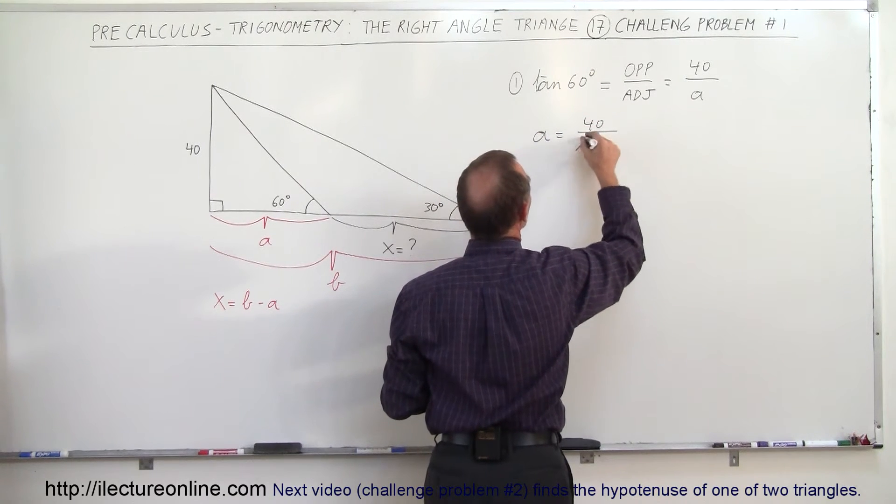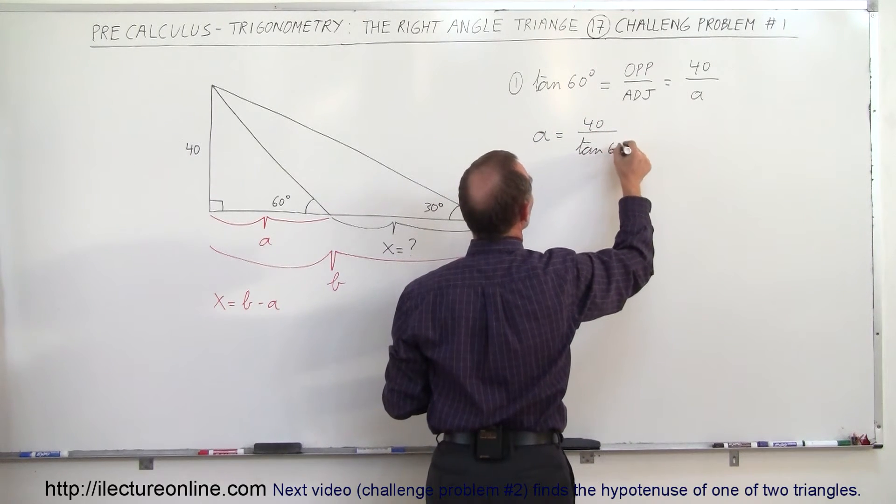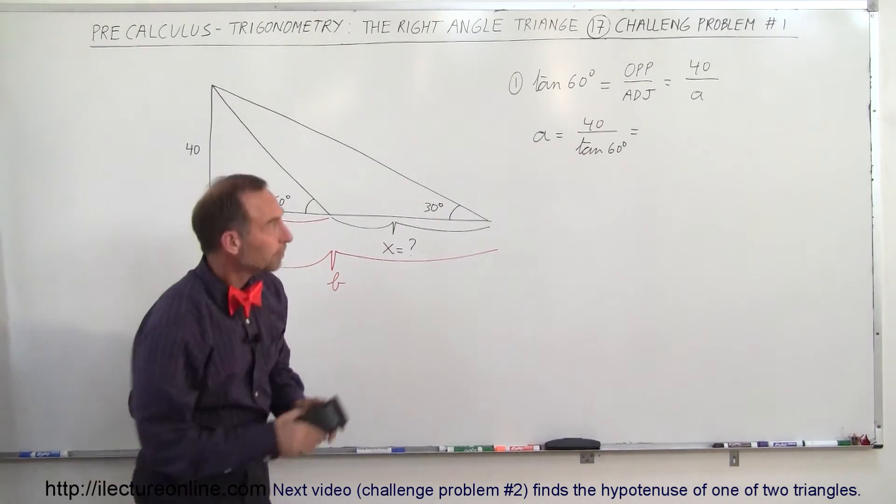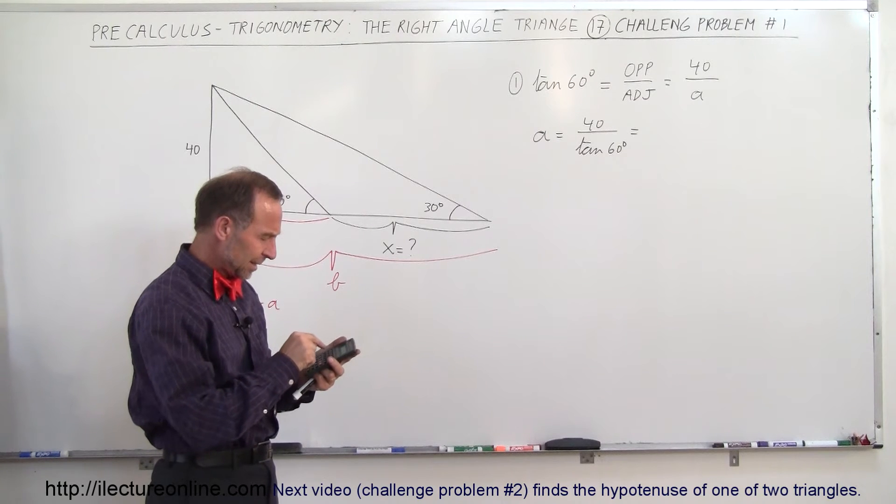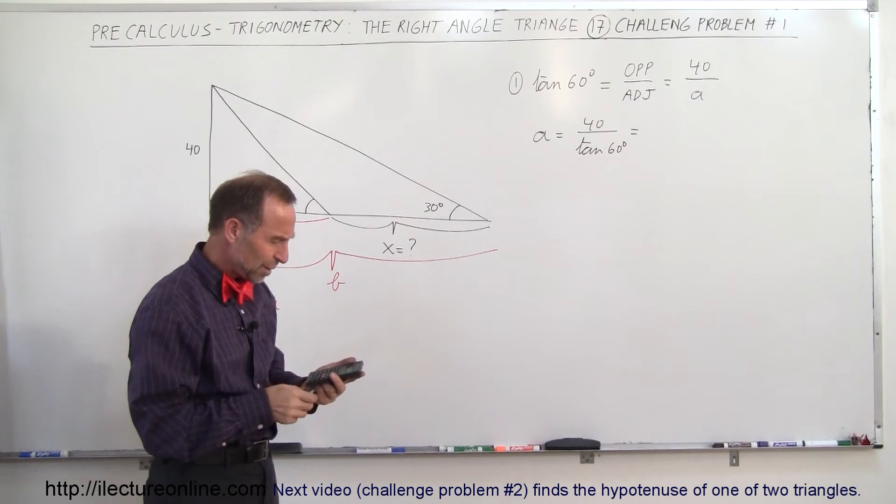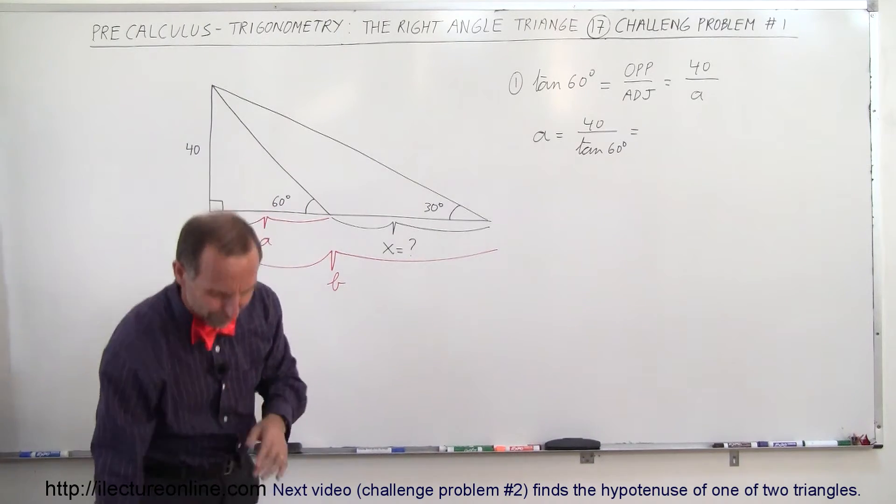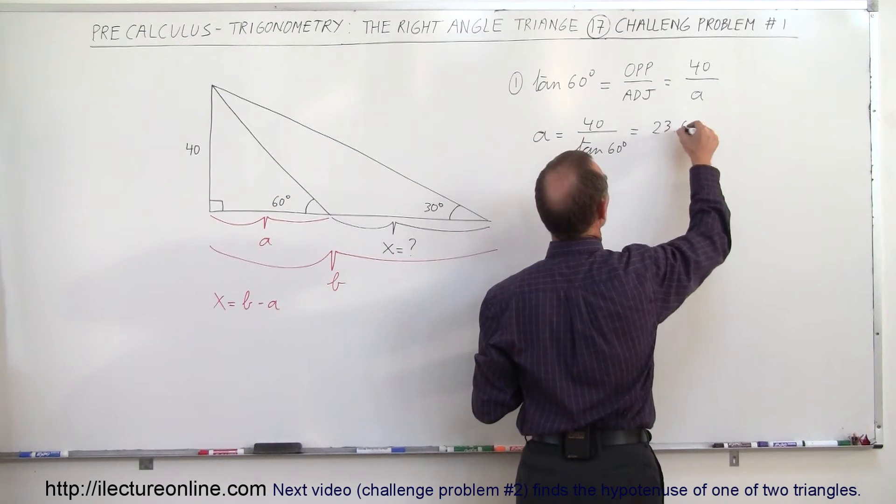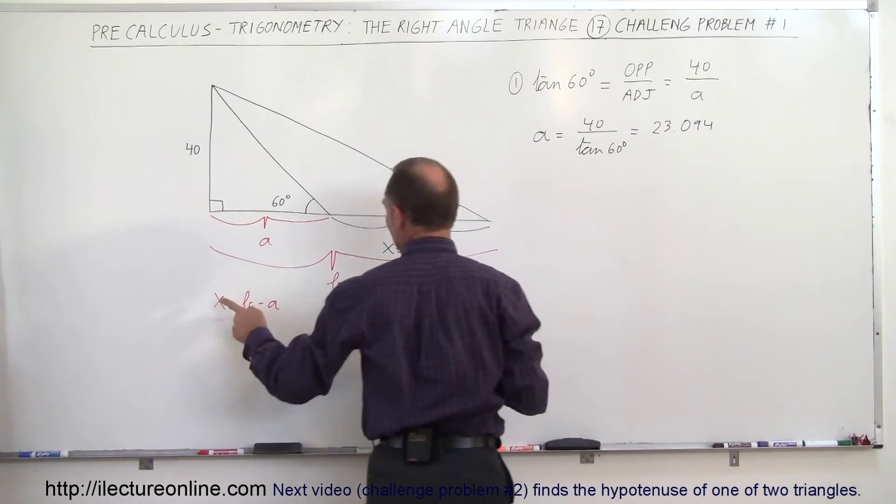We can say that A is equal to 40 divided by the tangent of 60 degrees. And then we go ahead and grab our calculator. So we go 40 divided by, take the tangent of 60, and that gives us 23.094. I'll keep a few extra decimal places, so 23.094. So that's the length for A.